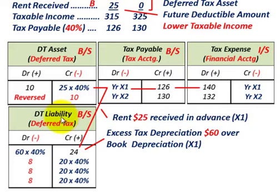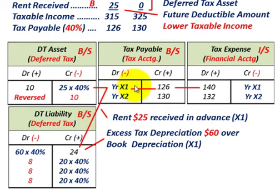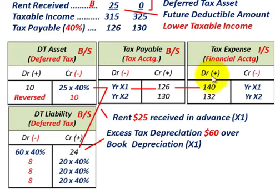Deferred tax assets and liabilities reverse themselves. In year X2, the deferred tax asset is credited out. The deferred tax liability, which started with a credit balance, reverses out by $8,000 each year — that's the $20,000 annual depreciation times 40%. Checking year X1: credits of $126,000 tax payable plus $24,000 deferred tax liability equal $150,000, which matches debits of $140,000 tax expense plus $10,000 deferred tax asset. They balance.